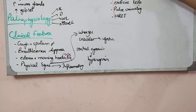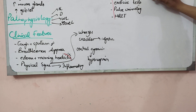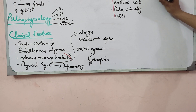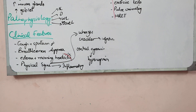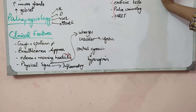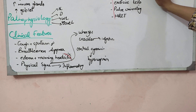Alpha-1 antitrypsin level is very important, especially for emphysema. Alpha-1 antitrypsin is an enzyme that stops elastase so that elastase cannot destroy the alveolar wall. If alpha-1 antitrypsin is deficient, the alveolar wall is destroyed. So when we investigate COPD, we must check alpha-1 antitrypsin levels.